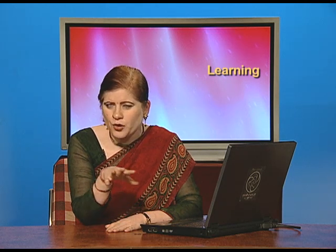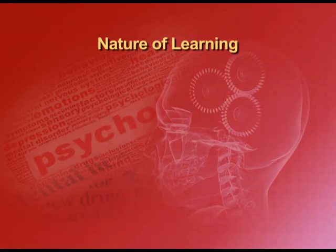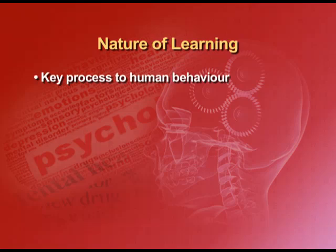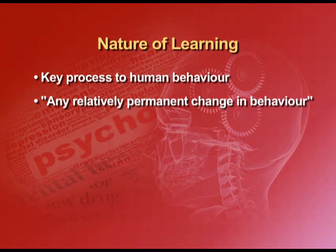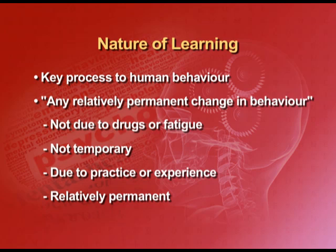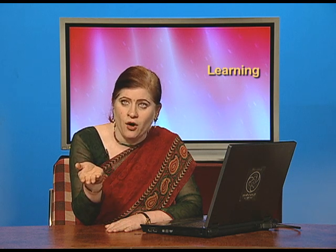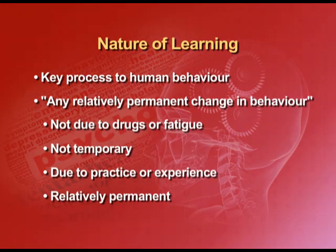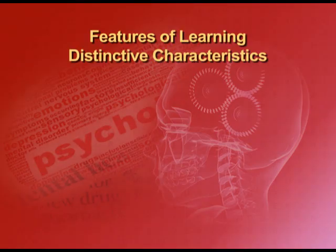So friends, you might be thinking this is learning and we know all about it — then why, as a student of psychology, is it being given a different chapter, and why are there so many concepts? Do not worry, we shall discuss all this. As a concept of psychology, learning is a key process to human behavior. When we define it, we can say: any relatively permanent change in behavior which is produced by experience is categorized as learning. That means no temporary change — nothing which is a result of drugs or fatigue — can be termed as learning. Only things that are a result of practice or experience are known as learning. This brings us to the determinants of learning, or distinctive characteristics of learning.